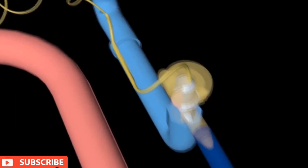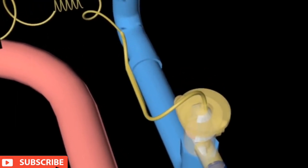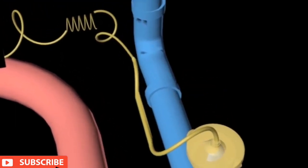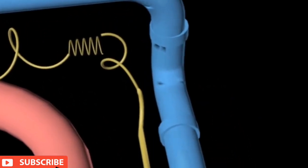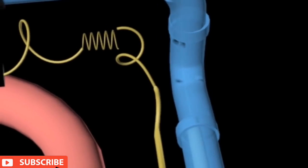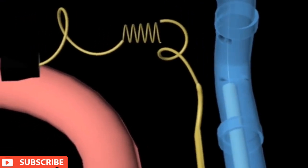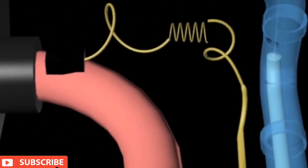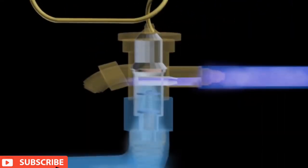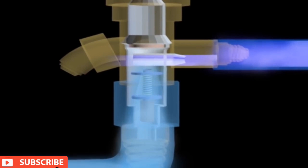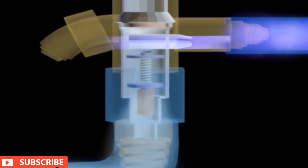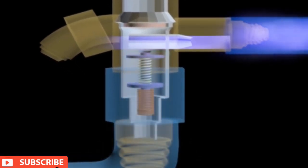A sensing bulb placed on the outflow of the evaporator detects the temperature of the refrigerant and sends a signal to the TXV. The needle valve in the TXV controls the flow of refrigerant based on the transmitted signal.